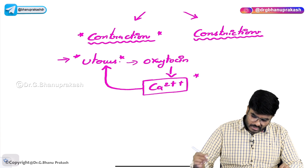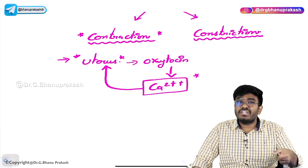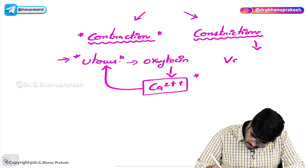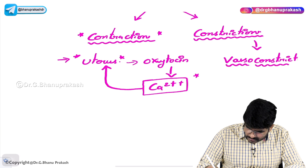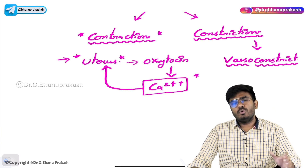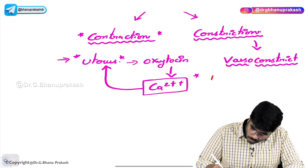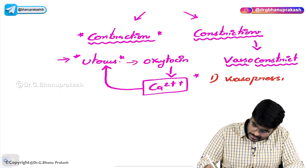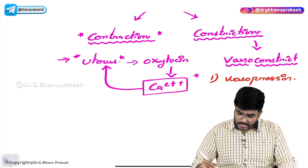Now let's see what are the hormones which are using calcium for constriction. Here, constriction means vasoconstriction. Could you recall what are the hormones involved in vasoconstriction? One such hormone is vasopressin. The name itself says it — vasopressin is pressing the blood vessels, causing constriction of blood vessels.